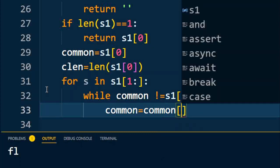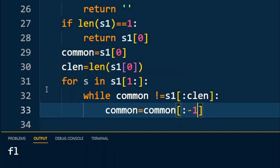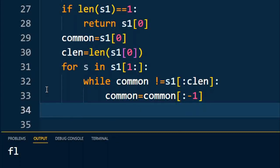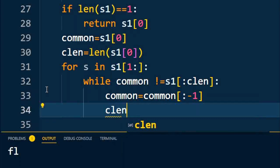The common_length has been decreased and is equal to the length of common. Finally, if that common_length is equal to 0, then it will return null.